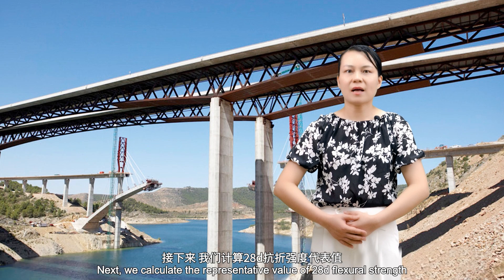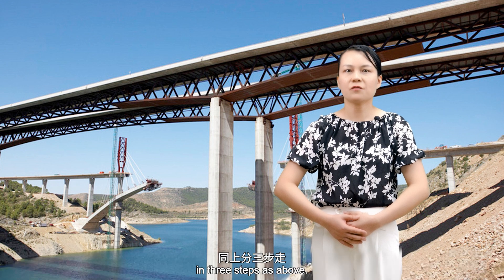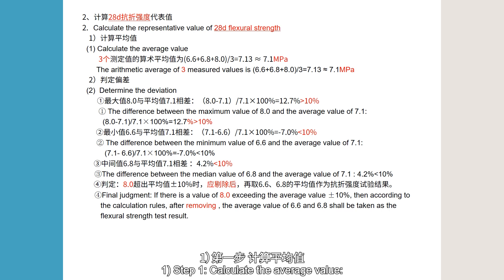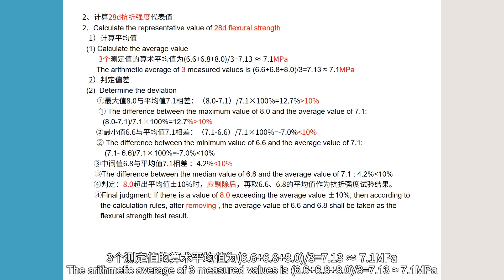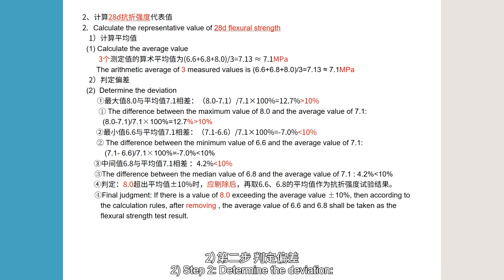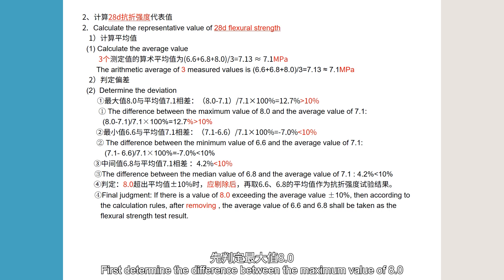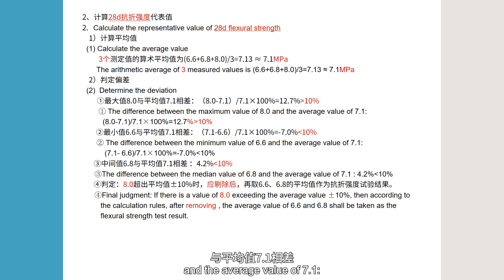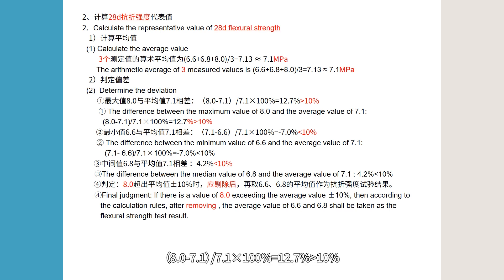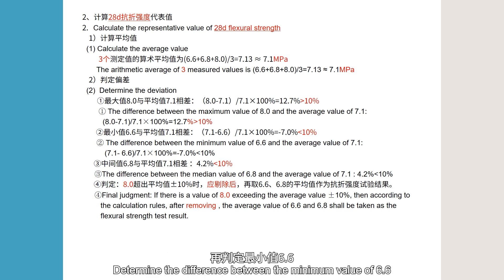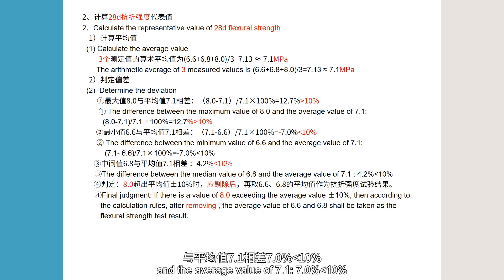Next, we calculate the representative value of 28-day flexural strength. Step 1: Calculate the average — (6.6 + 6.8 + 8.0) ÷ 3 = 7.13, approximately 7.1 MPa. Step 2: Determine the deviation. The maximum value 8.0: (8.0 − 7.1) ÷ 7.1 × 100% = 12.7%, greater than 10%. The minimum value 6.6: (7.1 − 6.6) ÷ 7.1 × 100% = 7%, less than 10%.